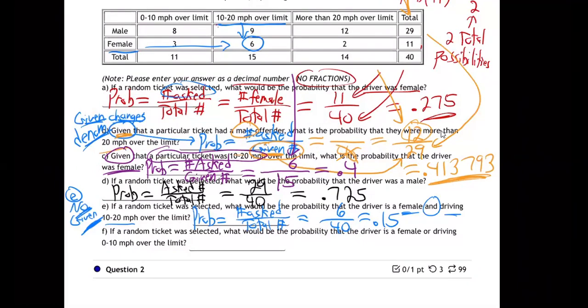That's what you want to ask yourself every time you read one of these — is it a given or is it not? How about F?